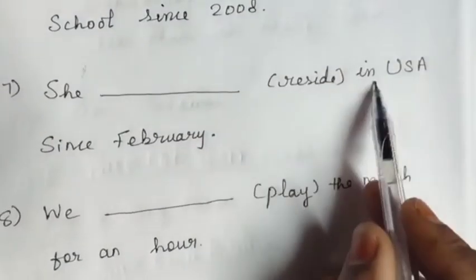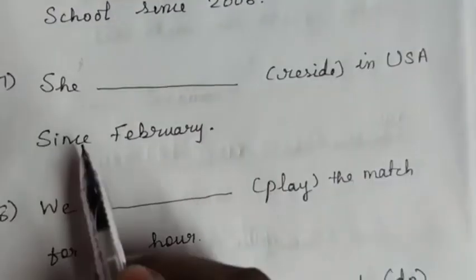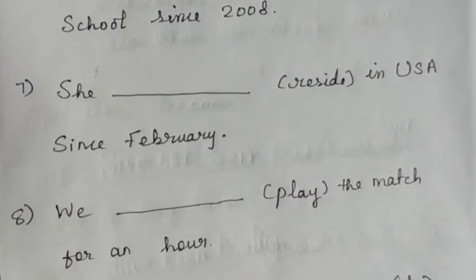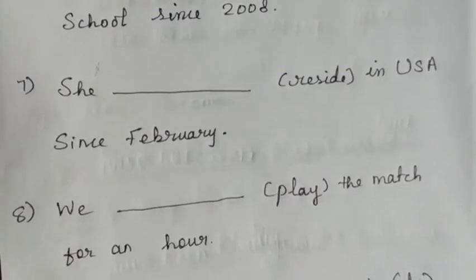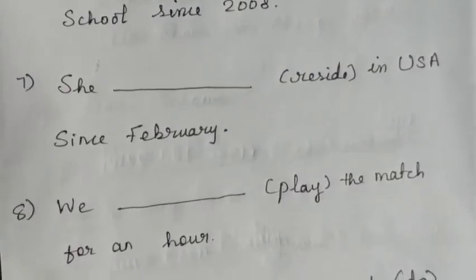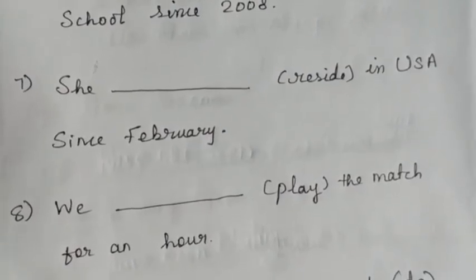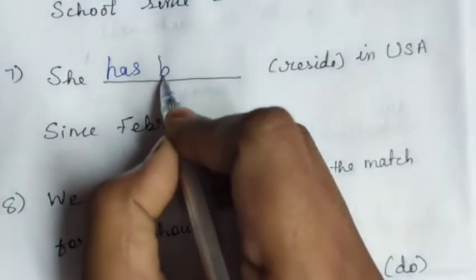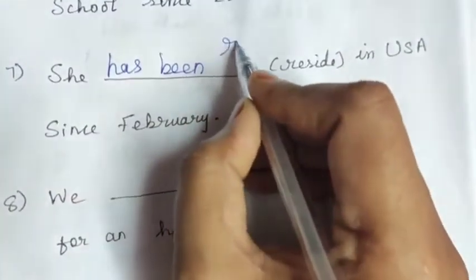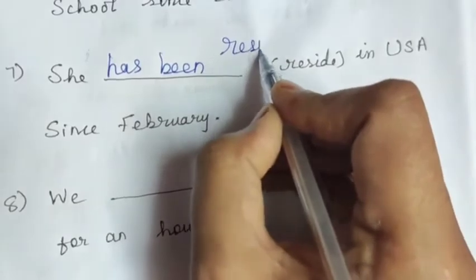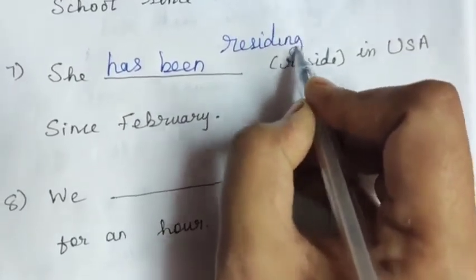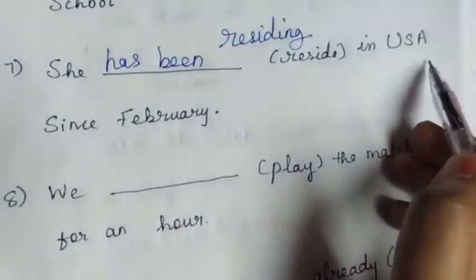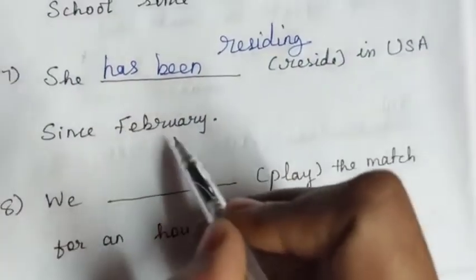Seventh: 'She dash reside in USA since February.' 'Reside' means live. 'She' is singular, so 'has been'. Since February is a point of time. Answer: 'She has been residing in USA since February.'